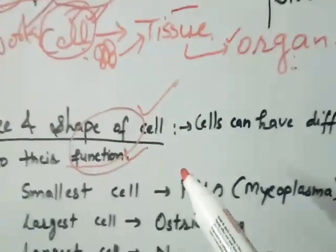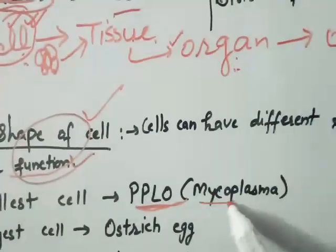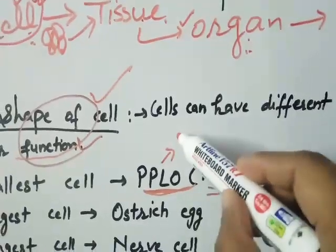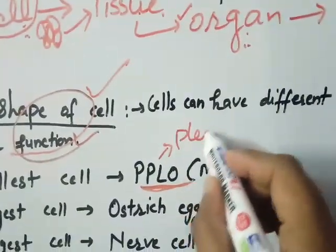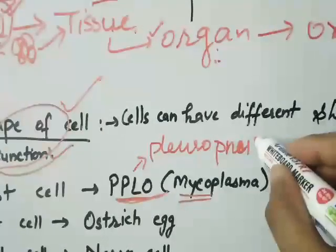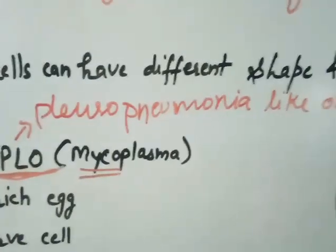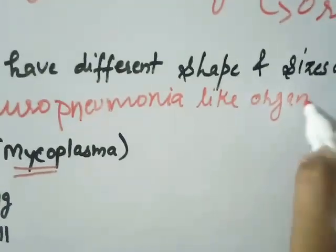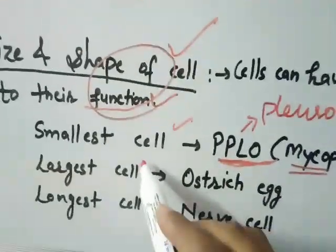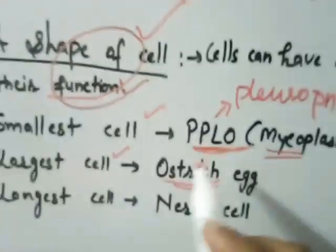What is the smallest cell? It is PPLO. Its other name is Mycoplasma. The full form of PPLO is Pleuropneumonia-Like Organism. So PPLO, or Mycoplasma, is our smallest cell.